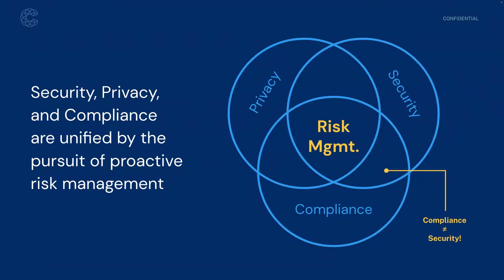There have been several high-profile data breaches where organizations met a compliance standard but still had a breach. Target, the retailer here in the U.S., had a data breach of credit cards while being PCI compliant. They had a network architecture with an enterprise-wide vulnerability not considered by PCI DSS requirements, which focuses only on systems accepting and processing credit cards, not the larger IT environment. Attackers breached that larger environment and pivoted to the credit card point-of-sale systems. Compliance is a starting point — security and privacy frameworks should go beyond that.